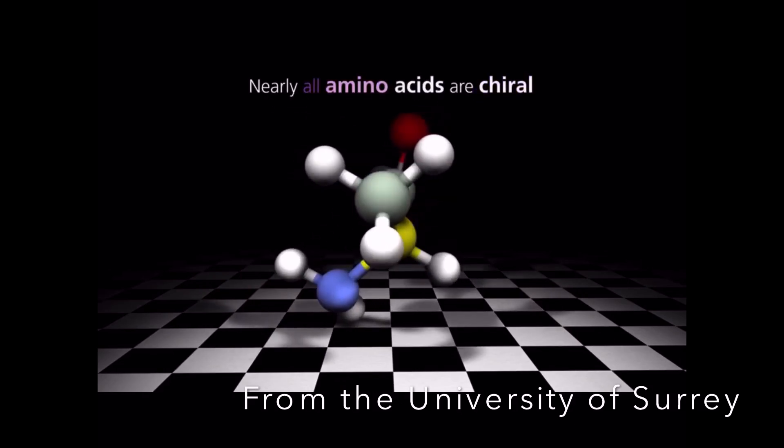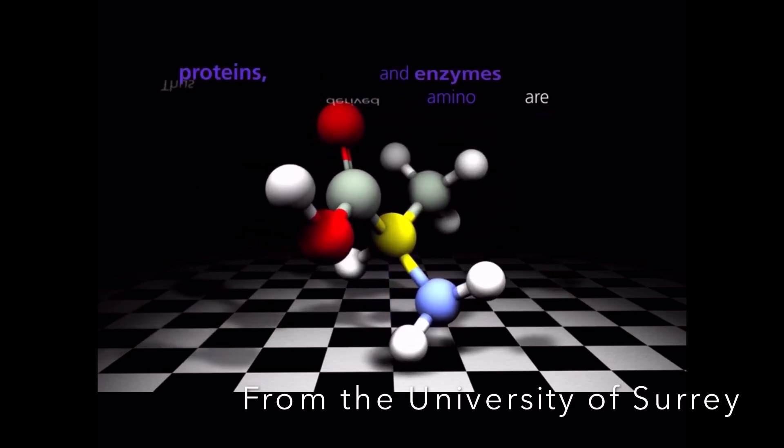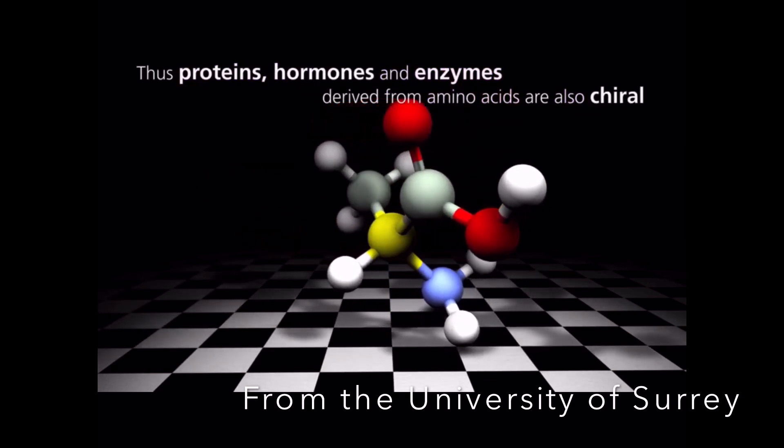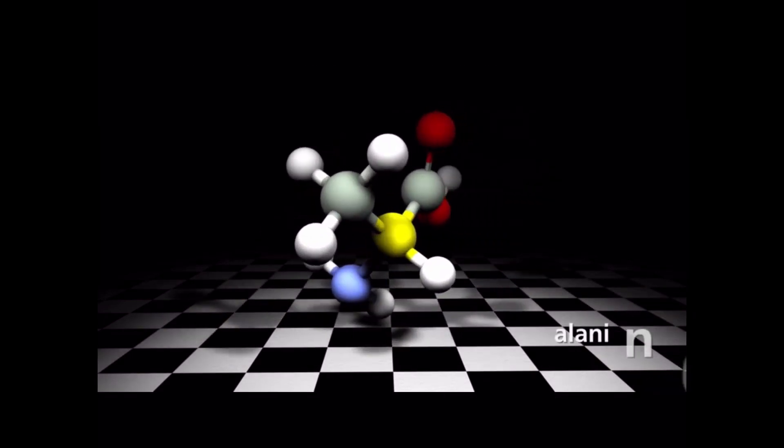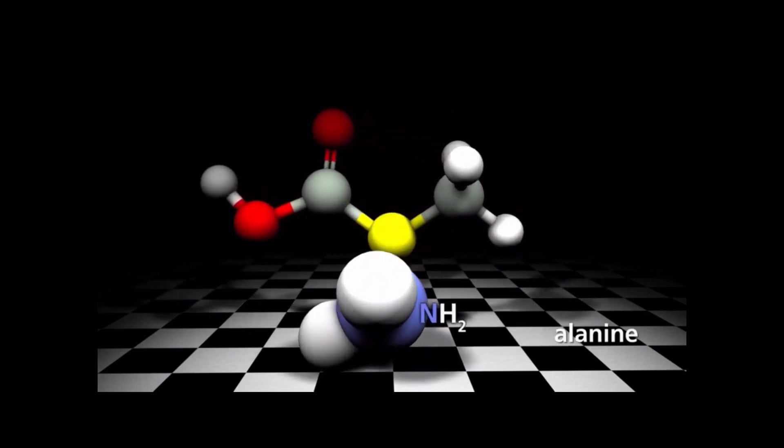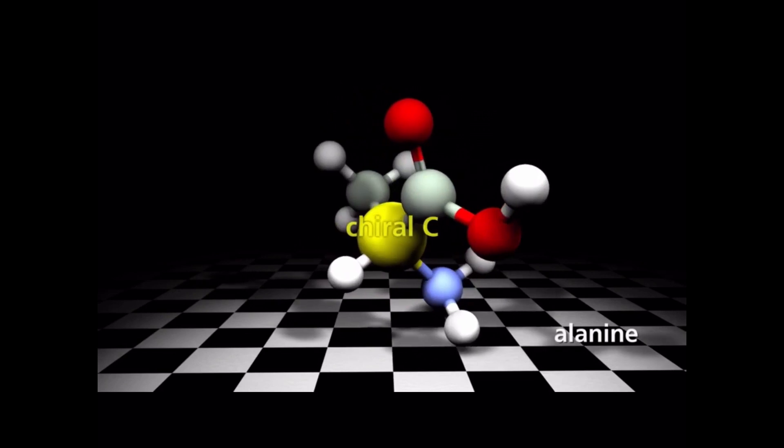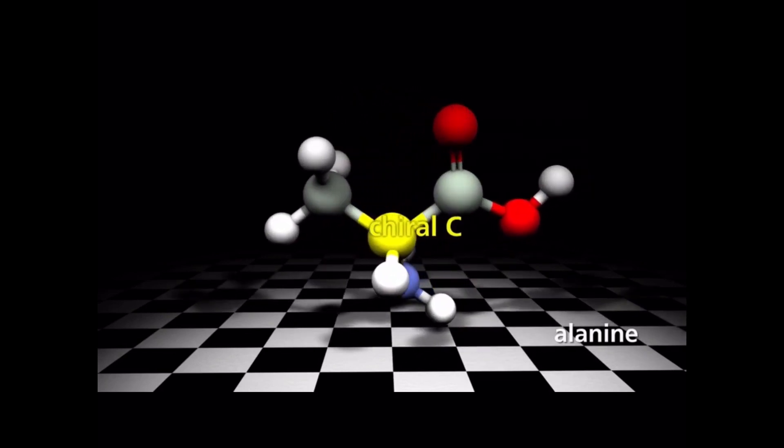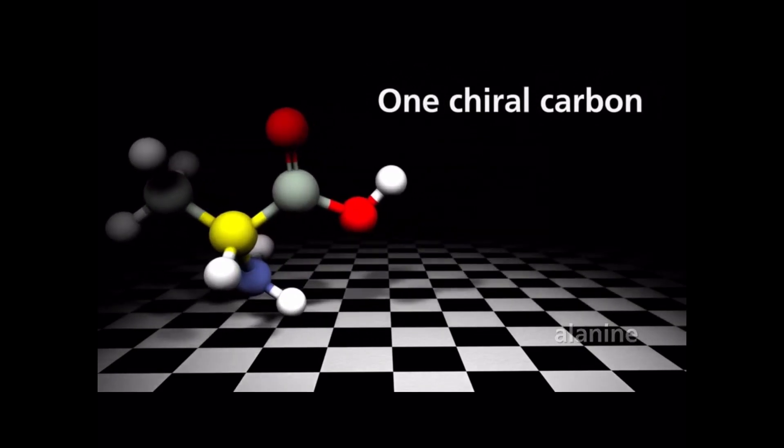In biochemistry, nearly all amino acids are chiral, and therefore any proteins, hormones and enzymes derived from amino acids are also chiral. This amino acid is alanine, a hydrogen atom, a methyl group, an amino group, and a carboxylic acid group, attached to the same chiral carbon atom. Alanine has one chiral carbon atom, and therefore just two possible optical isomers.